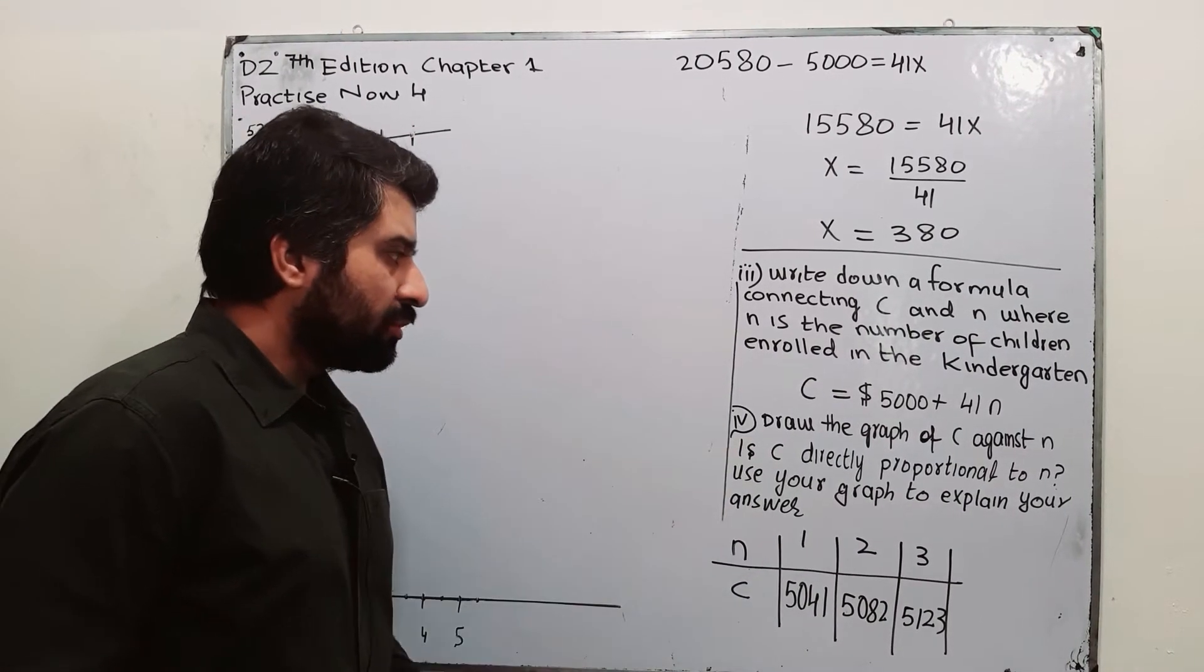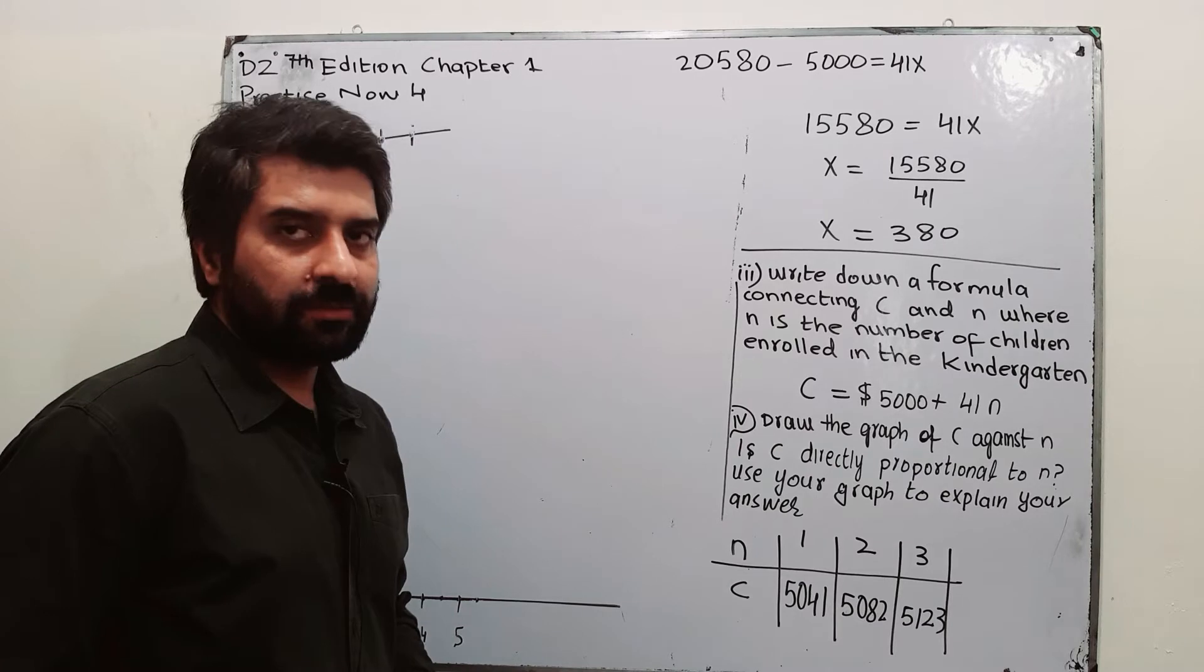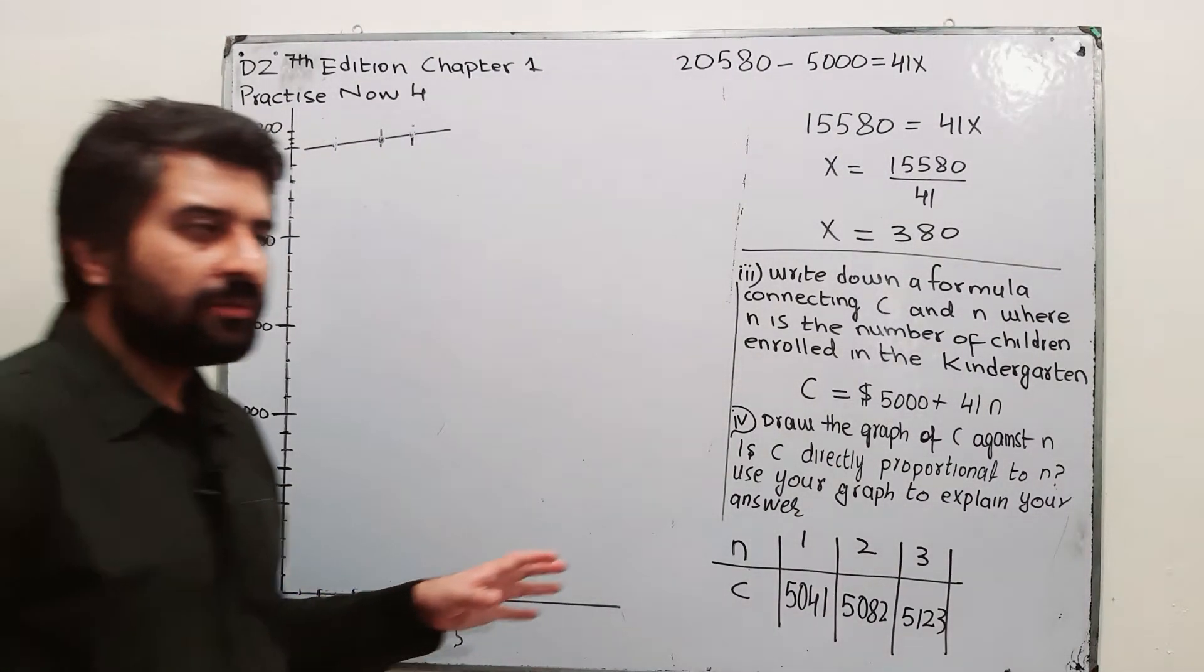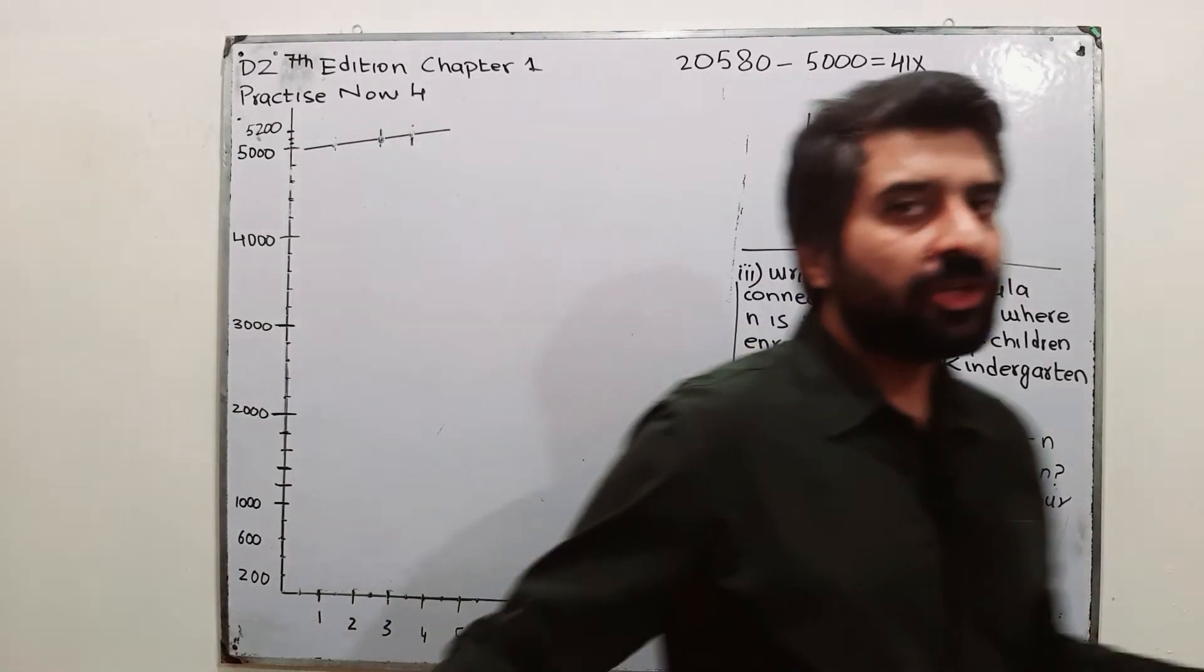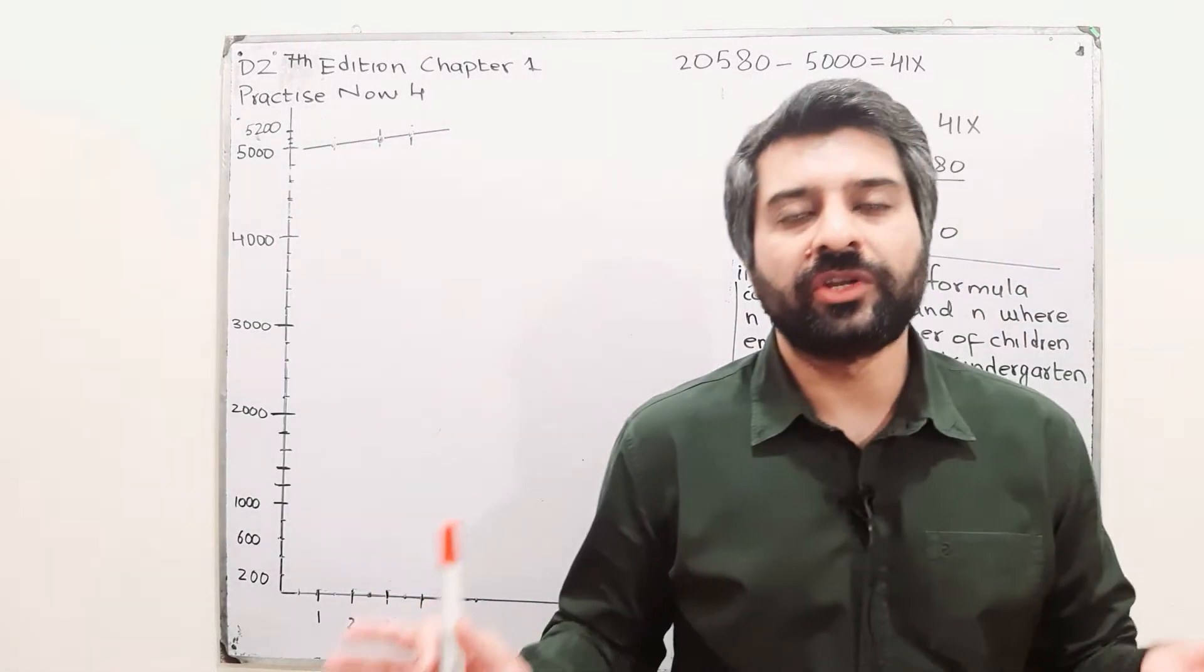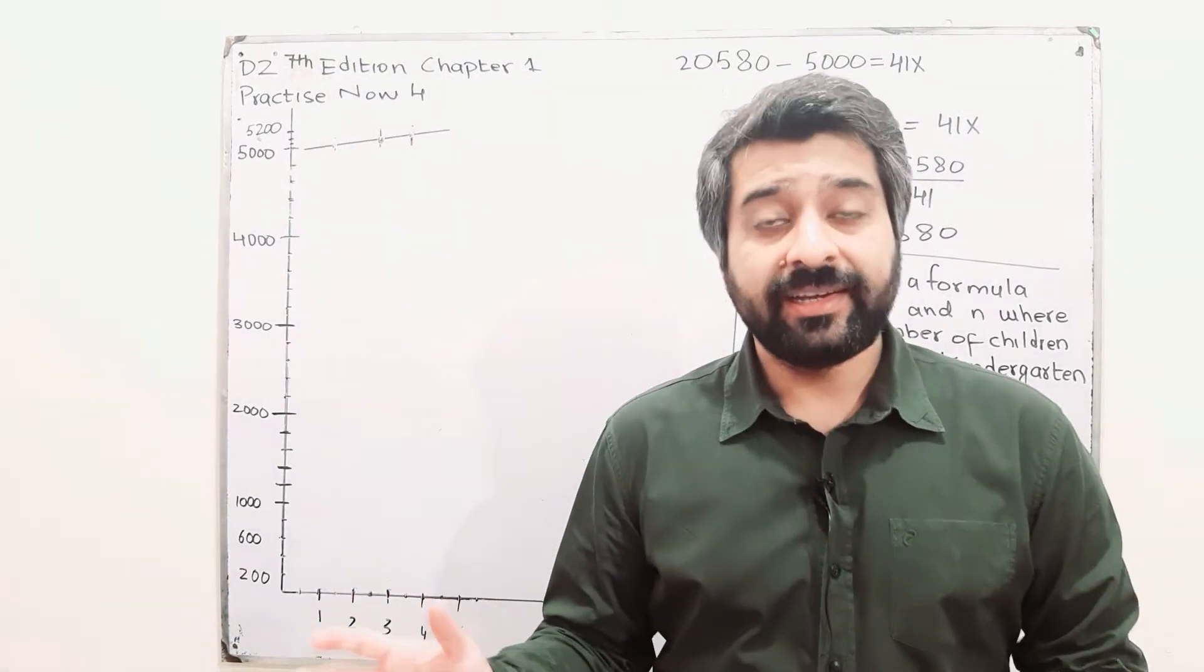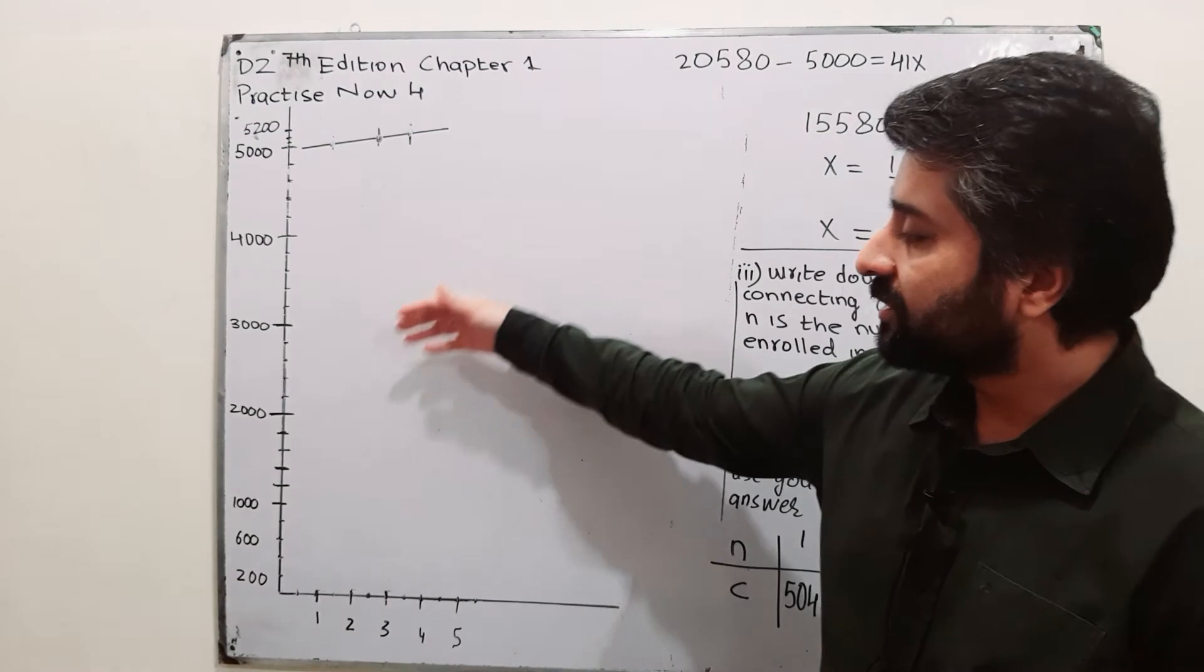So, this is the graph of C against N. C is directly proportional to N? Definitely, it is not directly proportional. For directly proportional, the graph should be a straight line. Well, this graph is a straight line, but it should also pass through the origin. So, this graph is not passing through the origin. So, C and N, they are not directly proportional.